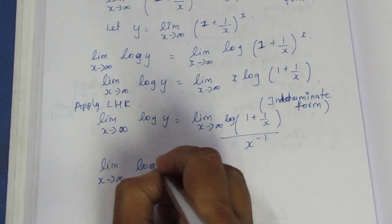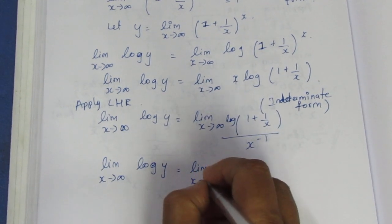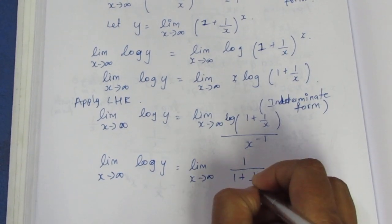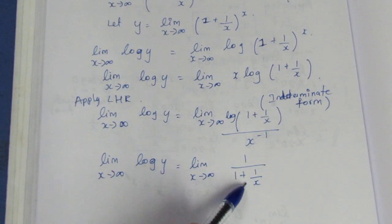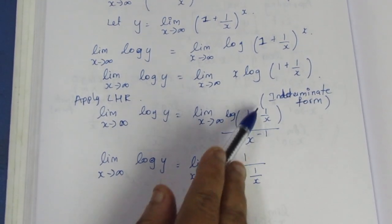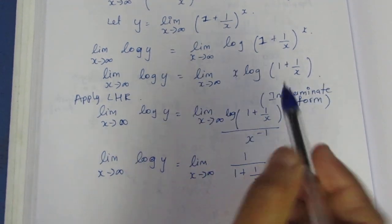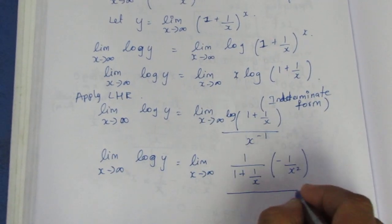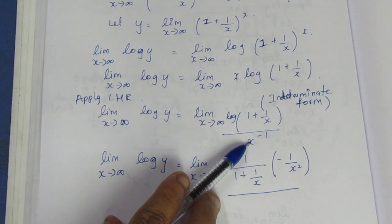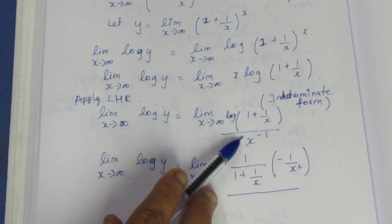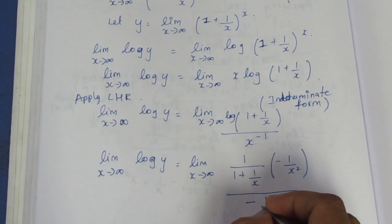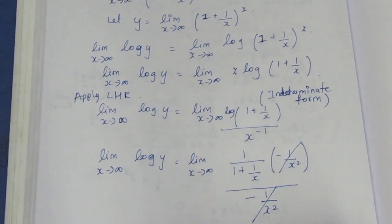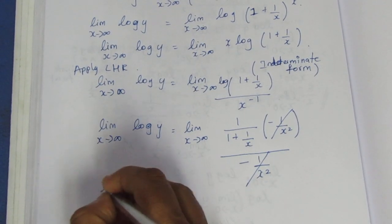Log y equals limit x tends to infinity. Differentiating: the numerator derivative of log(1 plus 1 by x) gives 1 over (1 plus 1 by x) times the inner function derivative, which is minus 1 by x squared. The denominator derivative of x to the minus 1 is minus 1 by x squared. We can cancel these terms.